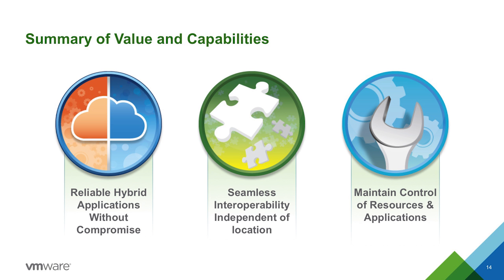In summary, the point with vCloud Air is that you can build reliable hybrid applications without any compromise around platform, networking, or portability. That seamless interoperability independent of location — whether you deploy it in California, Virginia, or your own data center — it's all the same. And we're able to do that with the same tooling and resources that you already use in-house.